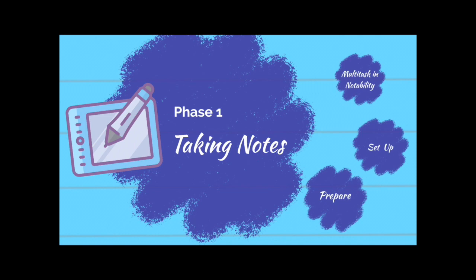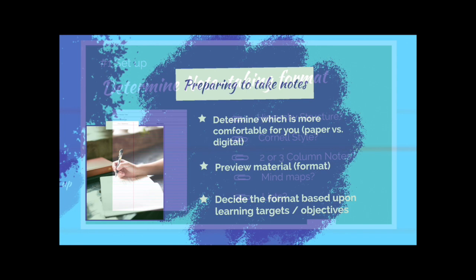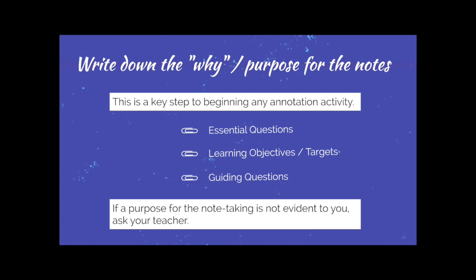The first phase is actually taking the notes. To prepare, determine which is more comfortable for you — are you going to take your notes on paper, or digitally through an app like Notability? Preview the source material: are you reading a textbook, a webpage article, or watching an educational video? This will help you determine how you want to format your notes. Format comes down to personal preference — maybe Cornell style, something hierarchical, a T-chart, a mind map, or a list. You can always ask your teacher for ideas. But one thing you absolutely need to do is write down the why — the purpose of the notes. Did your teacher give you an essential question, a learning objective, a target, or guiding questions? If the purpose is not evident to you, ask your teacher. Make sure you put that essential question or purpose at the very top of your notes.